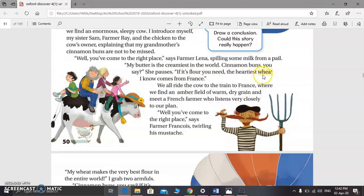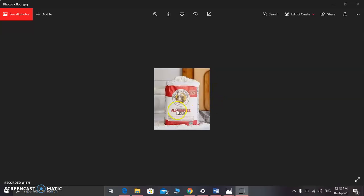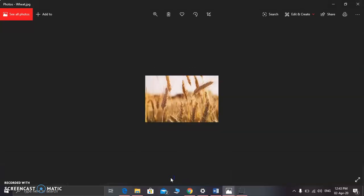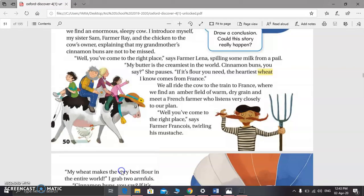So this is flour, which is milled wheat, crushed wheat. This is the wheat, which is a grain used to make bread and biscuits, crackers, etc. She said she has the heartiest wheat and the heartiest wheat comes from France.